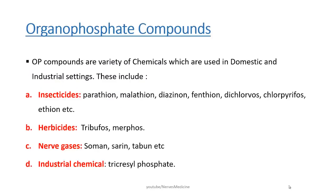Today we are going to talk about organophosphate poisoning. Organophosphate compounds are a variety of chemicals used in domestic and industrial settings. These include insecticides, herbicides, nerve gases, and industrial chemicals. Insecticides include parathion, malathion, diazinon, fenthion, dichlorvos, chlorpyrifos, and ethion. Herbicides include tribufos and merphos. Nerve gases include soman, sarin, and tabun. Industrial chemical is tricresyl phosphate.